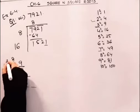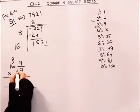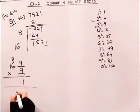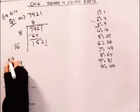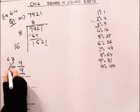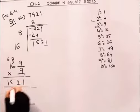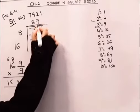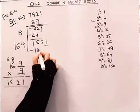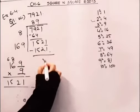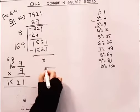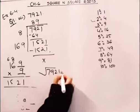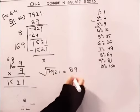9 nines are 81. 9 eights are 54. 54 plus 8 is 62. 9 ones are 9 plus 16 is 15. That means, if we put 9 here, that means the square root of 7921 is 89.